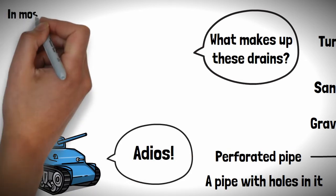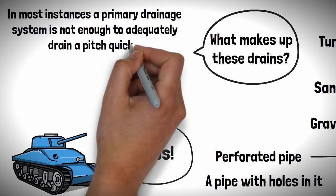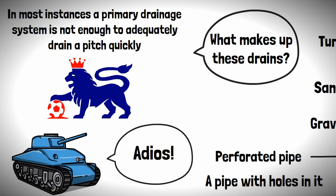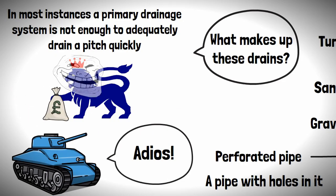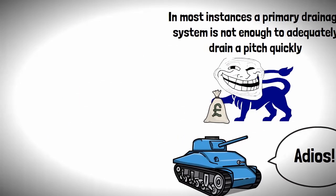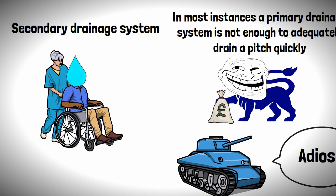In most instances, a primary drainage system is not enough to adequately drain a pitch quickly, especially for the Premier League. And as people know, due to recent events, time is money. So, a secondary drainage system will be installed to help aid the dispersal of surface water.